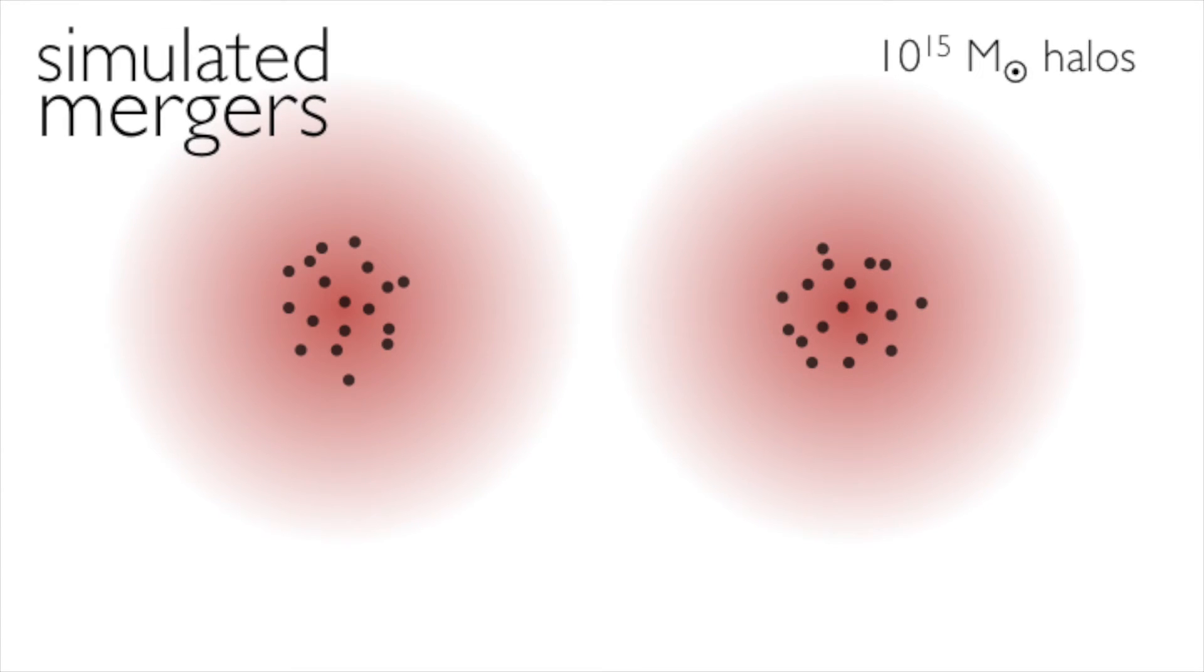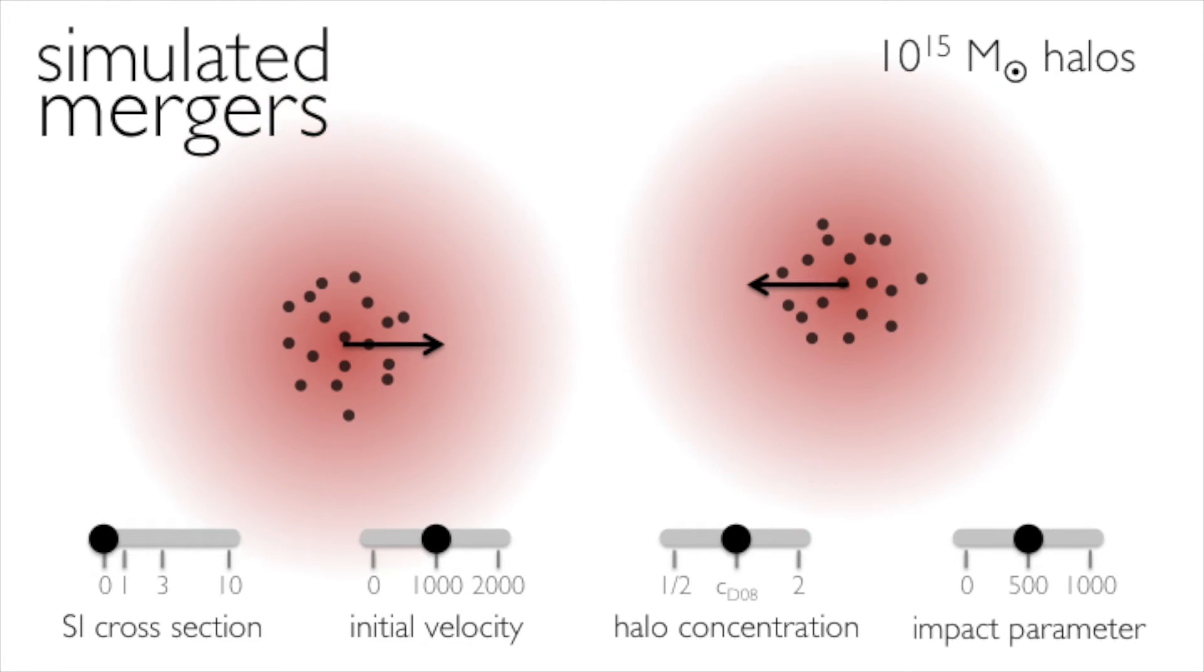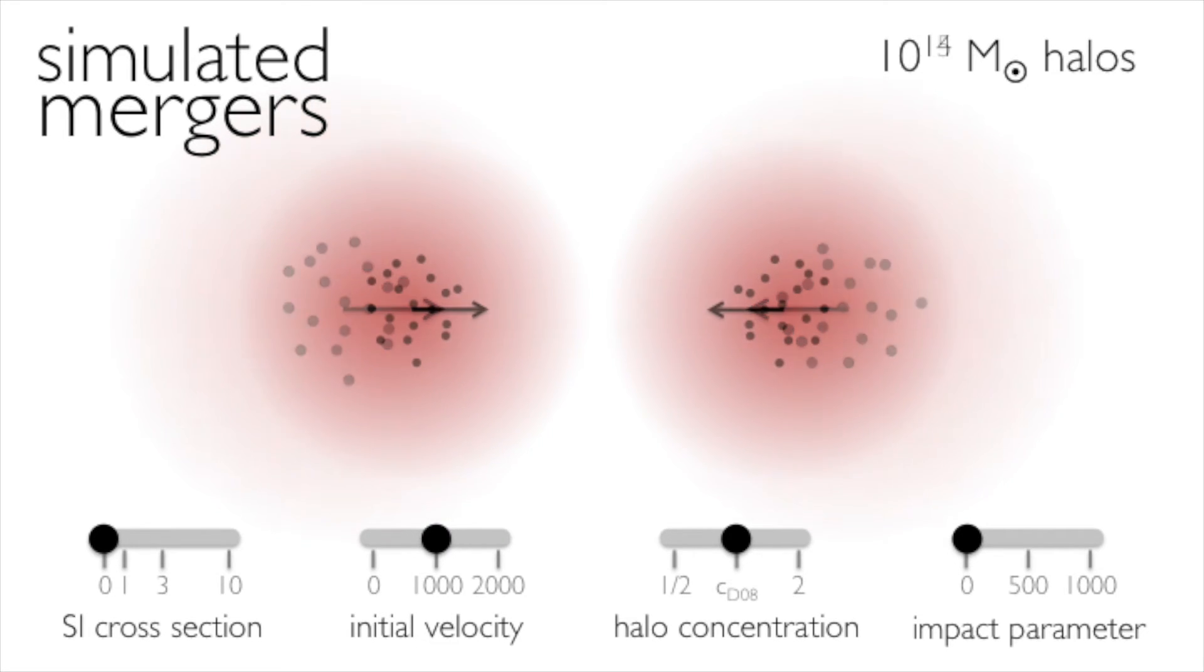To answer these questions, we've embarked on a new simulations program of SIDM cluster mergers. This paper is the first in our series in which we exclusively focus on equal mass mergers. We simulated idealized, isolated mergers of identical halos with 10 to the 15 solar masses, modeling cross-sections from 1 to 10 cm² per gram, and a range of merger velocities, halo concentrations, and impact parameters. Although we have only simulated 10 to the 15 solar mass halos, we show how our results can guide interpretation of equal mass mergers of different masses, as well as unequal mass mergers.